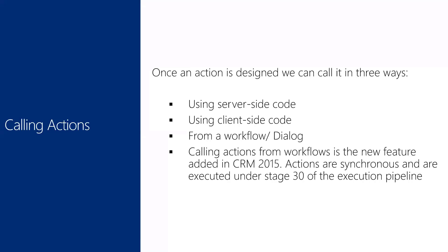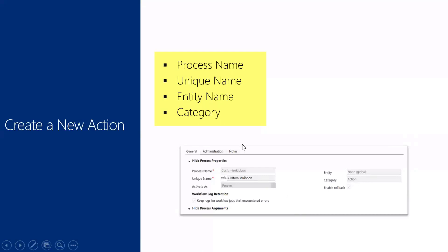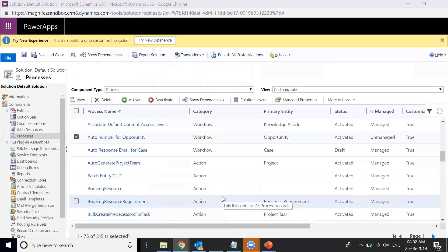An action is just an event — like performing a normal create operation by clicking on it. After that you can trigger a plugin or workflow on it. Someone needs to trigger this event: if you want to trigger it from a button, you link the action to the button so clicking the button triggers it. From the server-side code, client-side code, workflow, or dialogue, you can trigger an action. You specify the process name, unique name, entity name, and category.